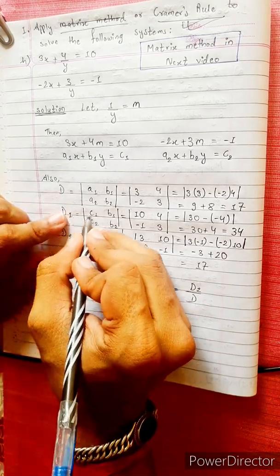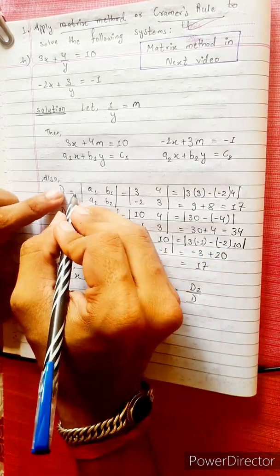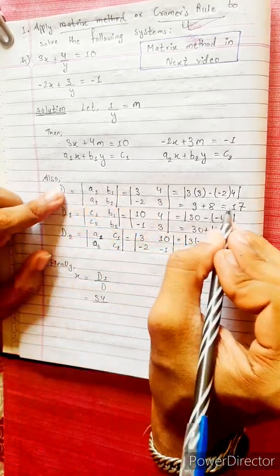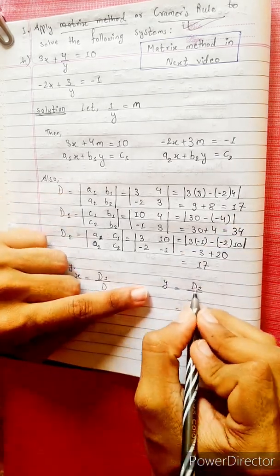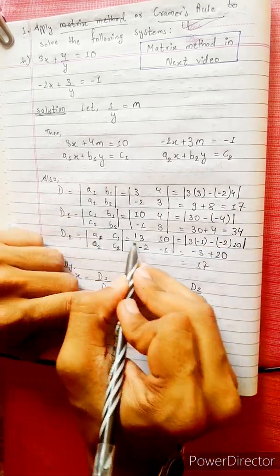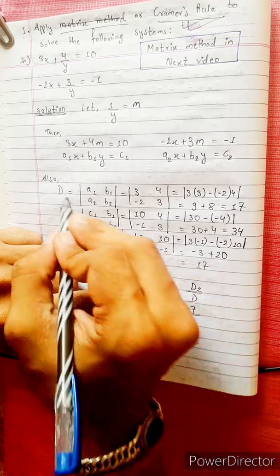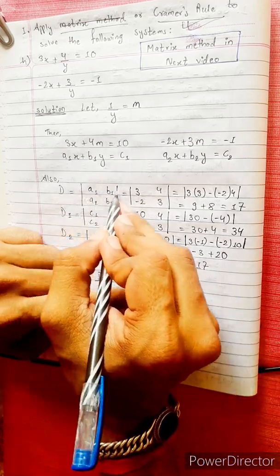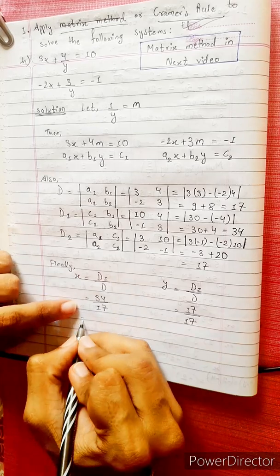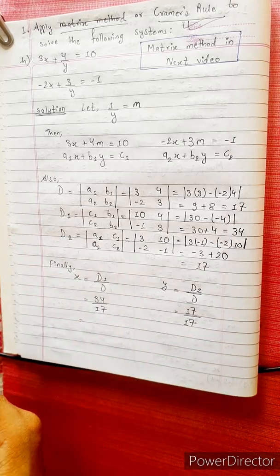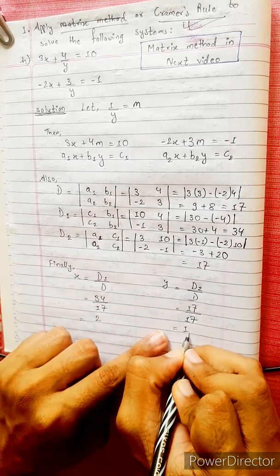X equals to D1 by D. D1 value is 34, D value is 17, so x equals 34 divided by 17, which equals 2. Y equals to D2 by D. D2 is minus 17, D is 17, so y equals minus 17 divided by 17, which equals minus 1.